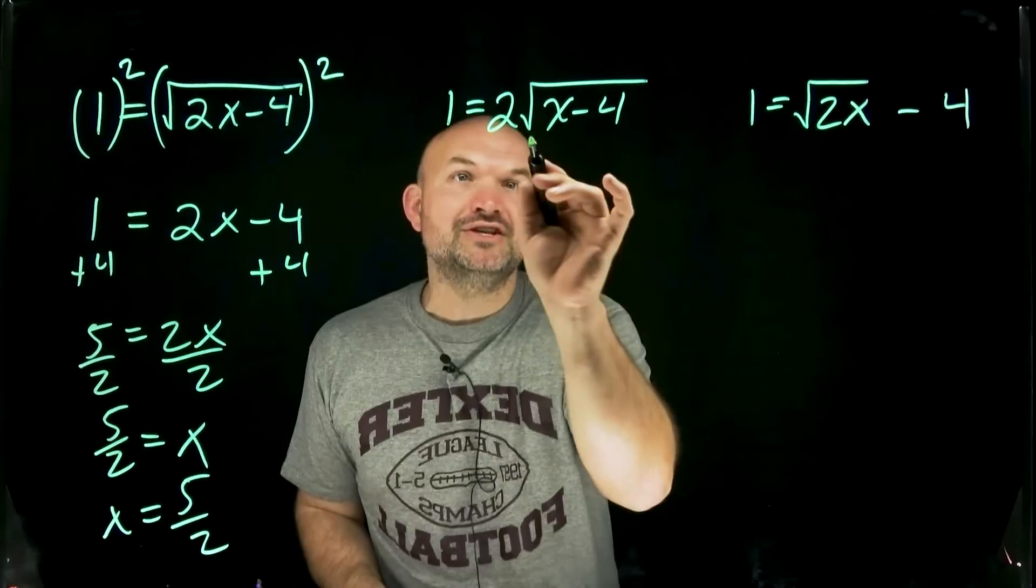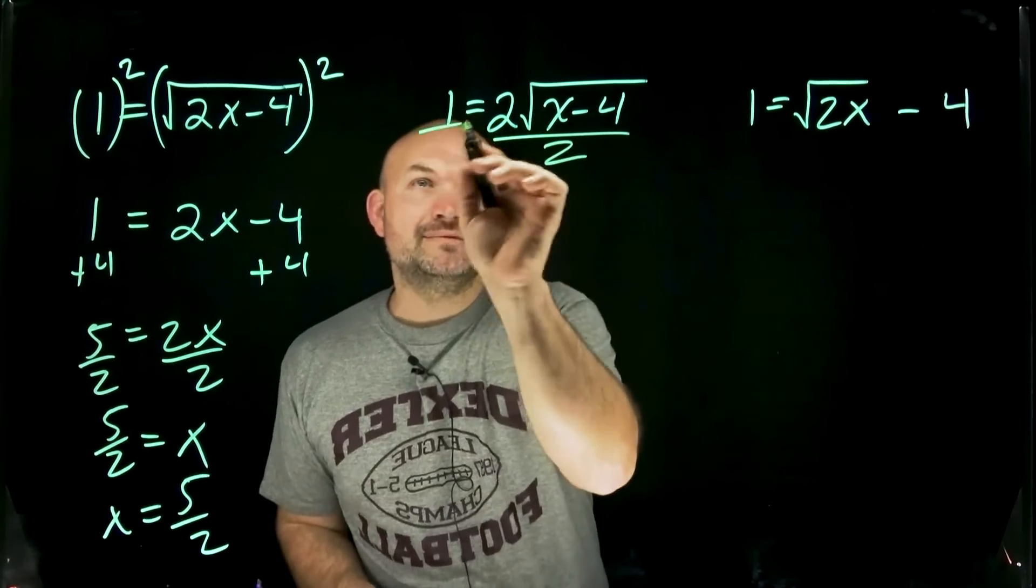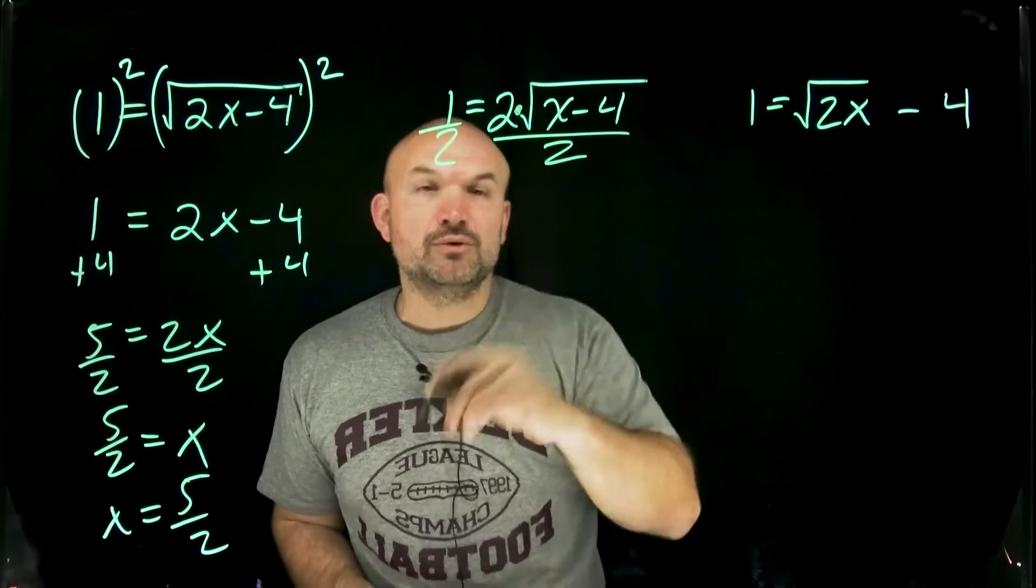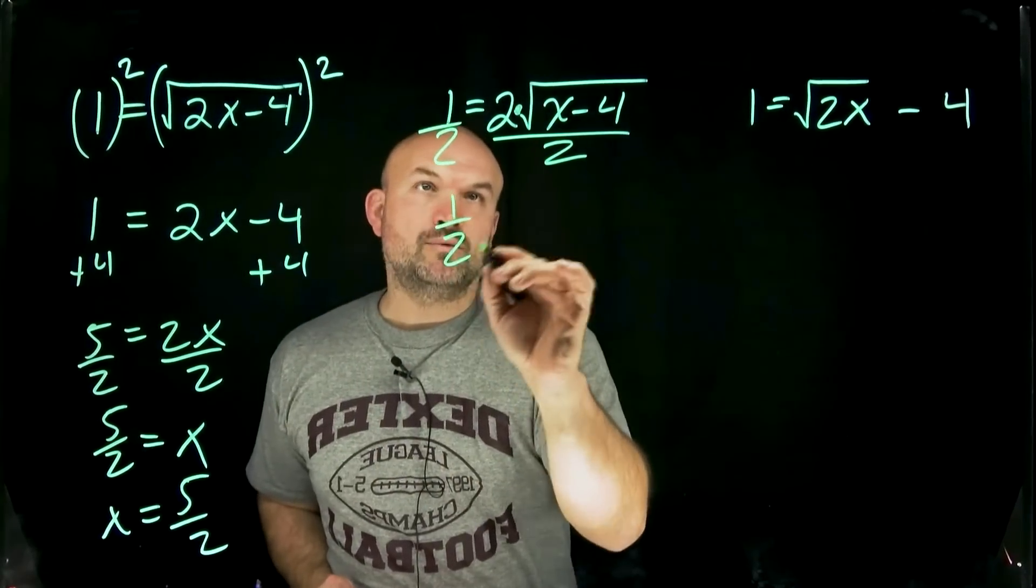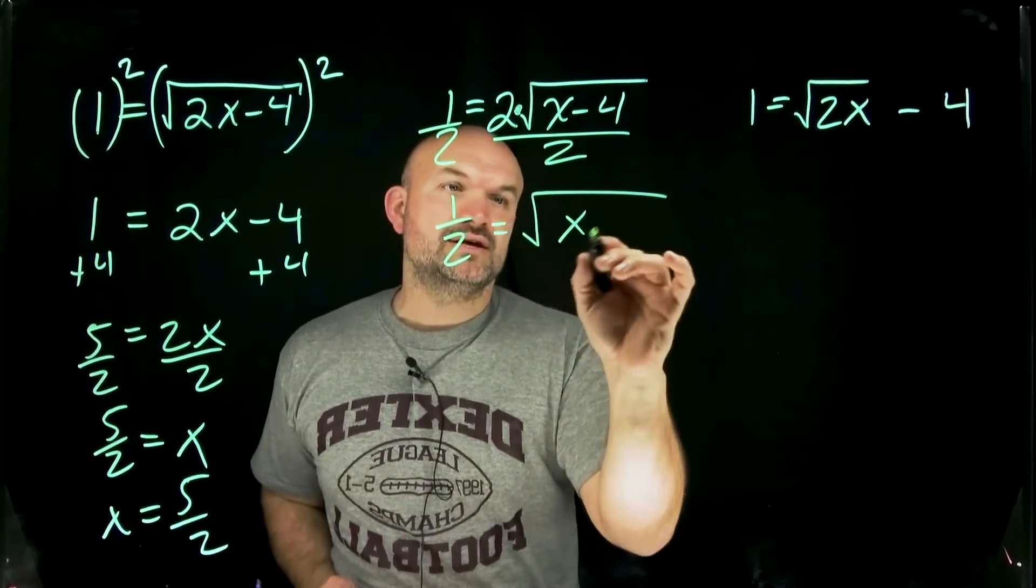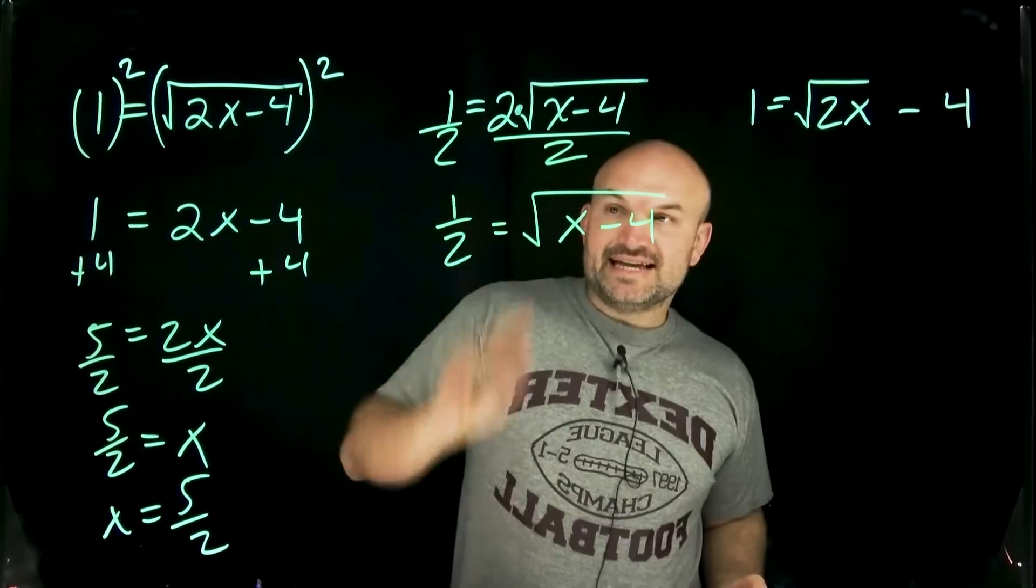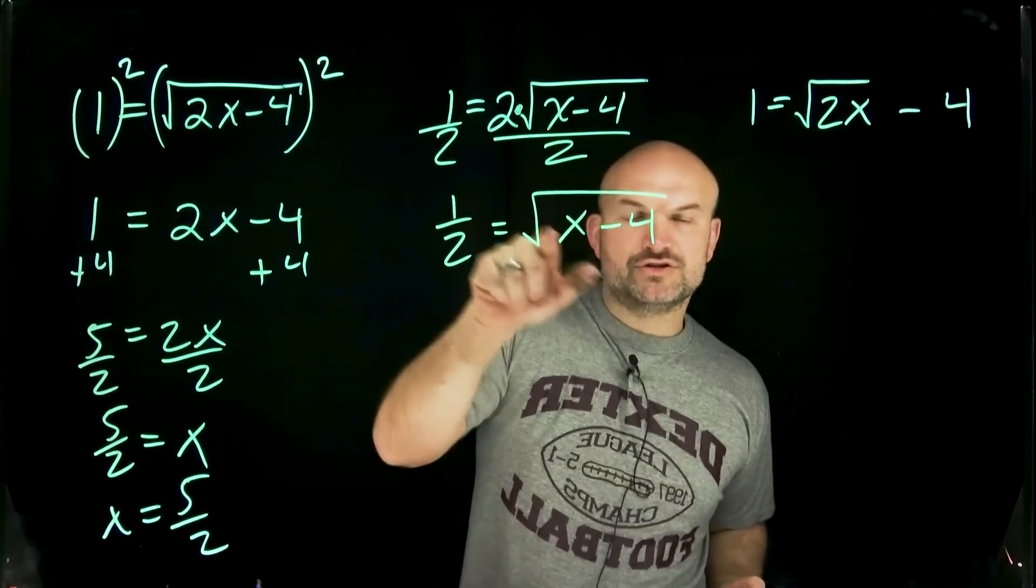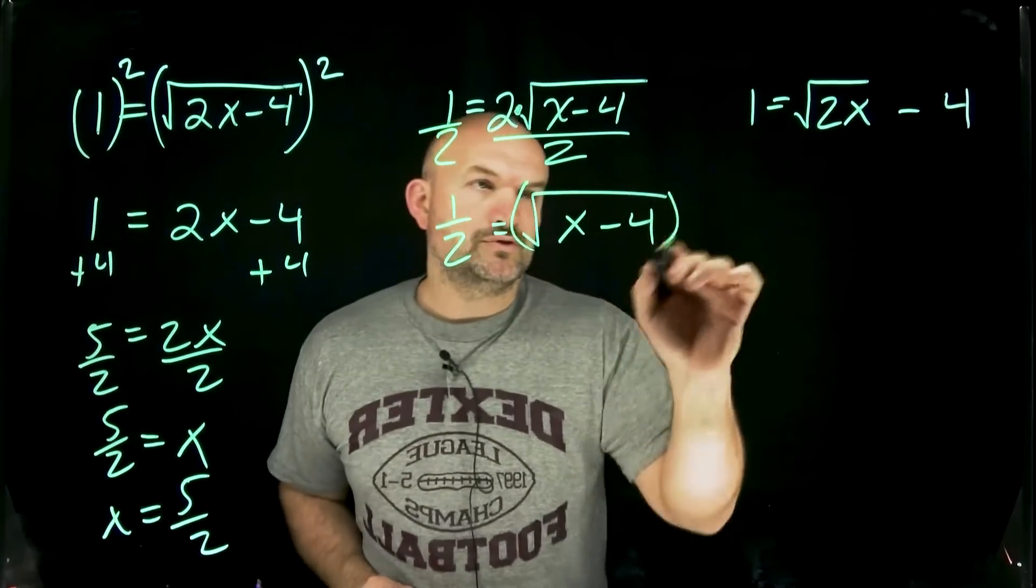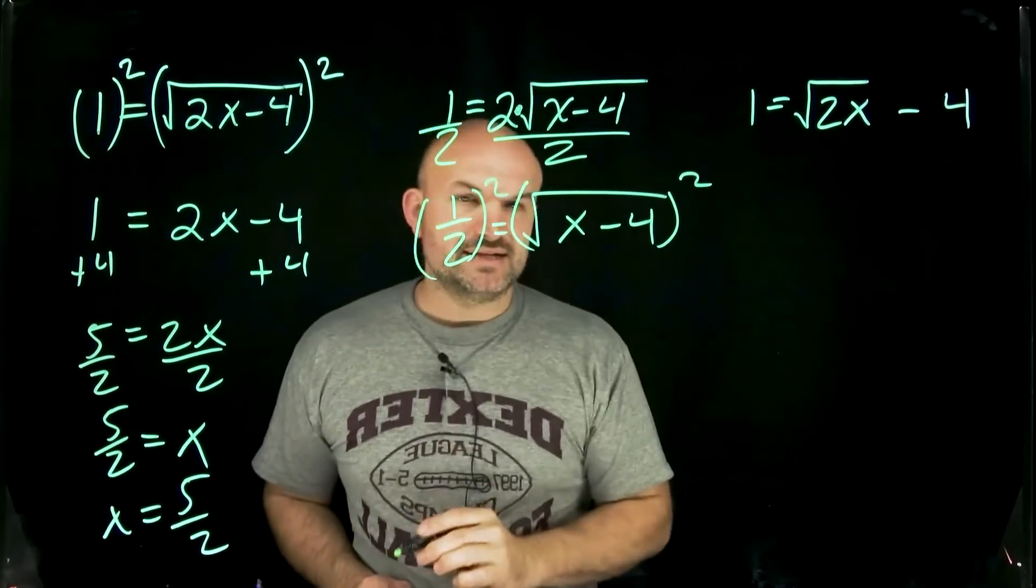So what we need to do is we need to undo that 2 by dividing by 2 because that's technically a 2 times the square root. So therefore I'm going to divide by 2 on both sides. I now have 1 half is equal to the square root of x minus 4. In this case what we're going to do here is now we can just go back to the step. We have our square root isolated so now we're going to square both sides.